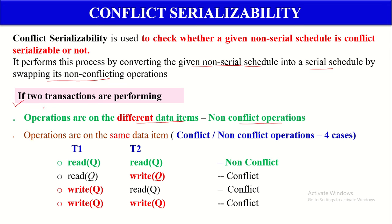If two Transactions are performing Operations on the same Data Item, then there is a possibility for being Conflict or Non-Conflict. We can check this using four cases. If two Transactions are performing Read and Read Operations on the same Data Item, that is known as Non-Conflict Operations — any number of Transactions can be permitted to do Read Operations on the same Data Item at the same time without violating the Consistency Property.